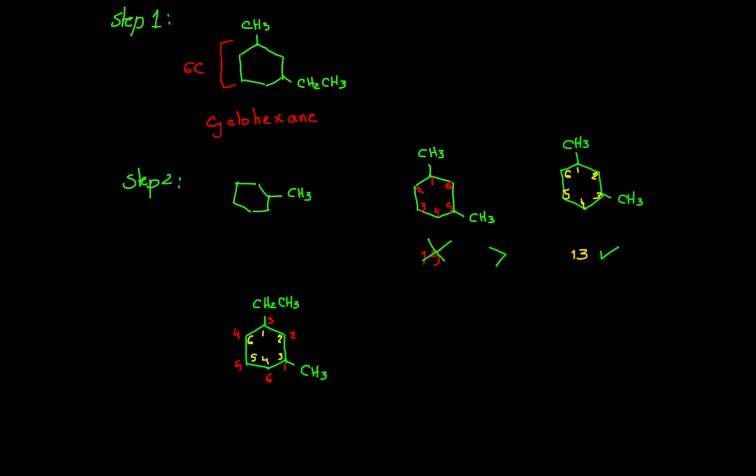So which one would be the correct way of numbering this cyclohexane? Now here I have ethyl group and here I have methyl group. Now following the alphabetical order, e in ethyl comes before m in methyl, and therefore my correct numbering would be the yellow numbering.